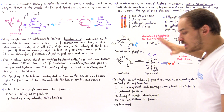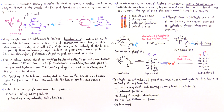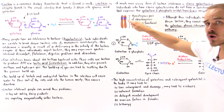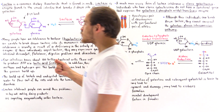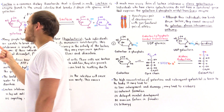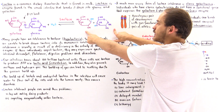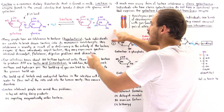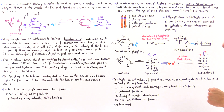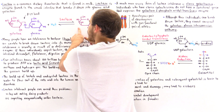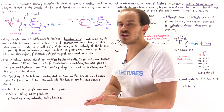A much more severe version of lactose intolerance is known as classic galactosemia. Individuals with classic galactosemia have an inability to digest the galactose molecule. They can break down lactose into the two individual monosaccharides and the cells can uptake these two sugars, but they cannot then break down galactose further, and the buildup of galactose can lead to many different problems.